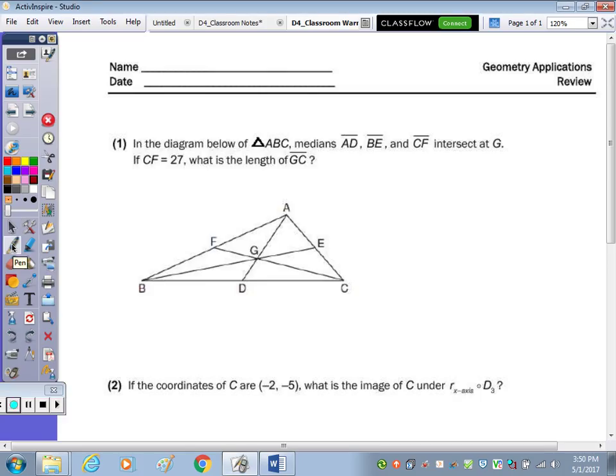Okay, in number one, it says that the diagram below triangle ABC has medians AD, BE and CF, which intersect at G.